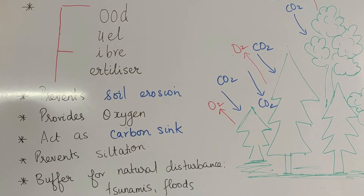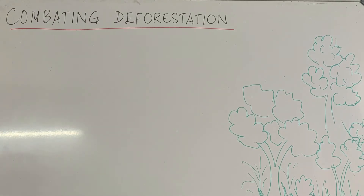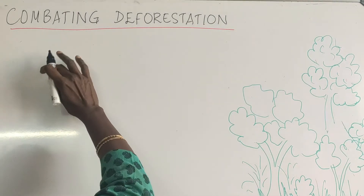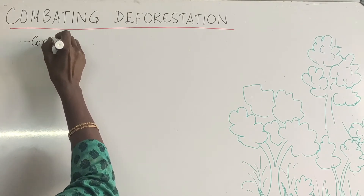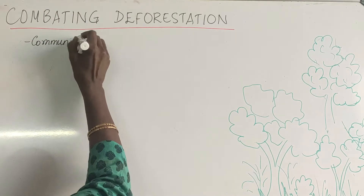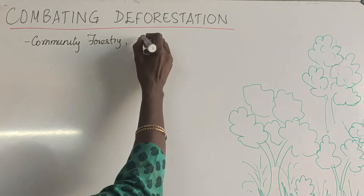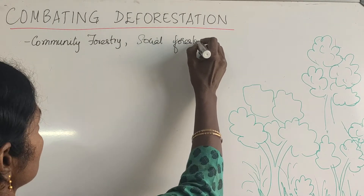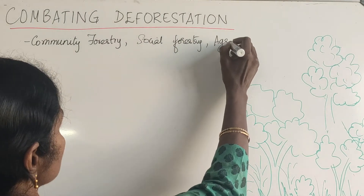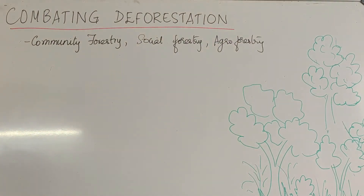Now we move on to how to combat deforestation, because it is a current problem. This can be done by community forestry, social forestry, and agroforestry — these are the methods by which we can fight against deforestation.